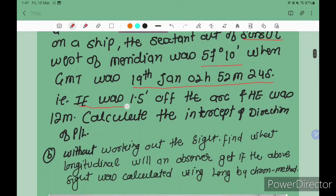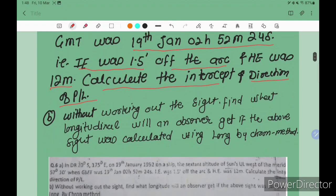Index error was 1.5 plus on the arc, and height was 12 meters. Part A: Calculate the intercept and direction of position line. So till now it's a normal question. The problem starts in Part B: Without working out the sight, find what longitude will an observer get if the above sight was calculated using long by chronometer method.